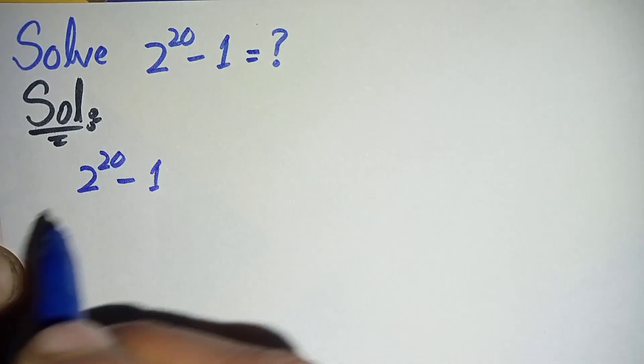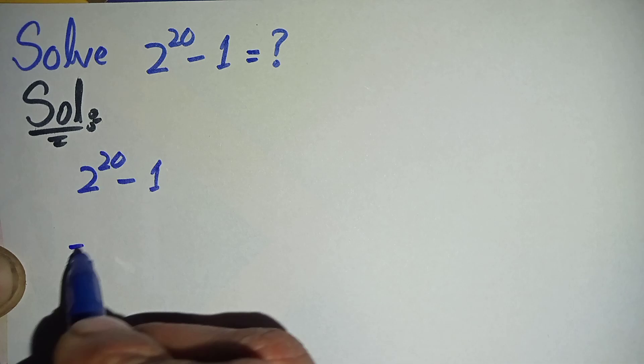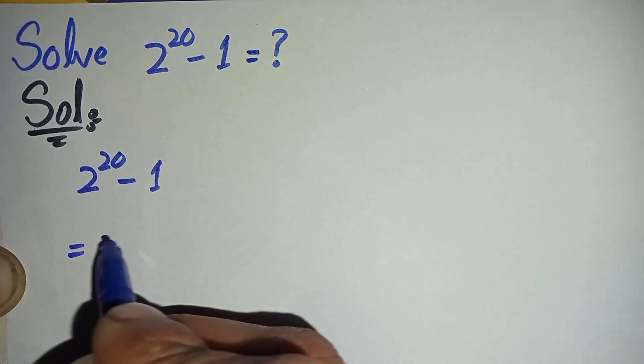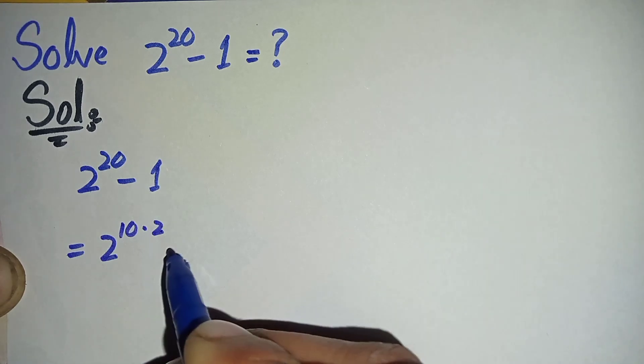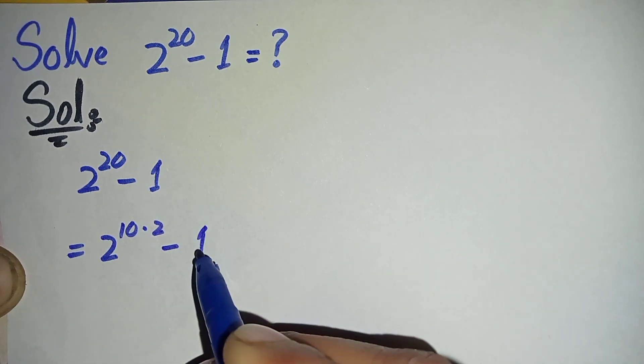Now next we will factorize this power 20, so we can write it as 2 raised to power 10 times 2 minus 1.